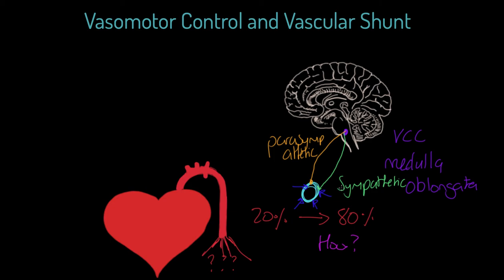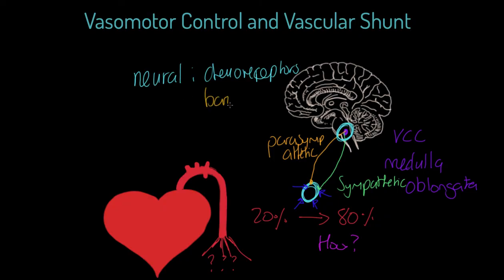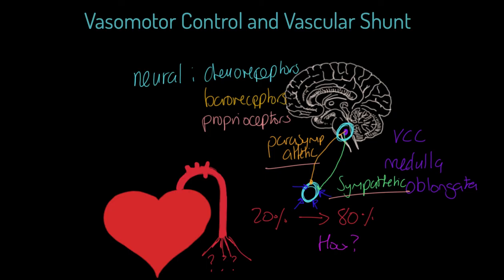The information that the VCC receives tends to be of neural nature. It comes from chemoreceptors telling the VCC that pH has gone down and exercise is occurring. It receives information from baroreceptors saying blood pressure has risen and exercise is happening. And it receives information from proprioceptors in the muscle and tendons saying that muscle and tendon tension is increased and exercise is happening - or indeed that it has ended. Therefore sympathetic stimulation occurs during exercise and parasympathetic during recovery for the working muscles.